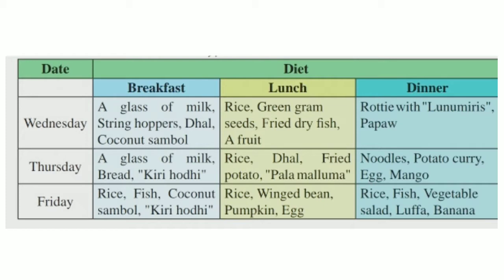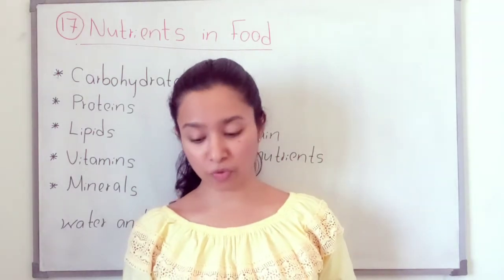In this table, for breakfast on Wednesday he has taken string hoppers, milk, dal with coconut sambal. Another day, a glass of milk and bread with kirihoti. Then on Friday, rice, fish, coconut sambal with kirihoti. So, different types of food.